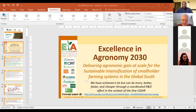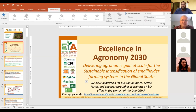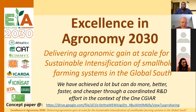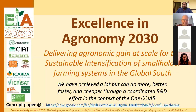Thank you, Jonathan. Thanks to all participants and for the introductory remarks. I'm going to give a bit of content on what Excellence in Agronomy 2030 is about. The tagline already says a lot: we want to deliver agronomic gain at scale for the sustainable intensification of smallholder systems in the Global South. An alternative tagline could be: we have achieved quite a bit with agronomy R&D in the CGIAR, but we can do more, better, faster, and cheaper if we have a coordinated R&D effort in the context of the 1CGIAR.